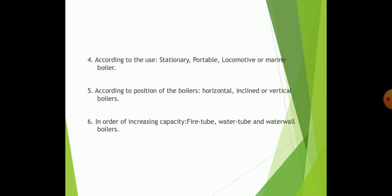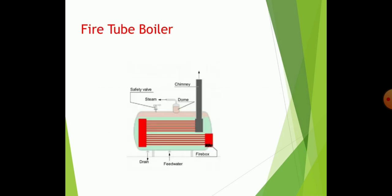According to use, boilers can be classified as stationary, portable, and locomotive boilers. On the basis of position, boilers are classified as horizontal, inclined, and vertical boilers. In order to increase capacity, fire tube, water tube, and water wall boilers are used.